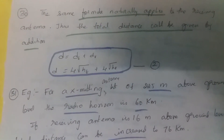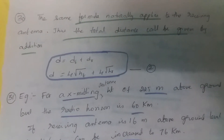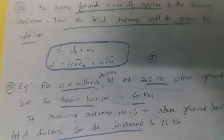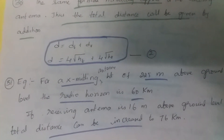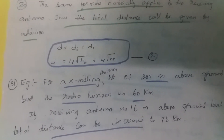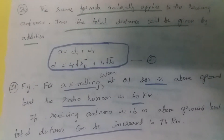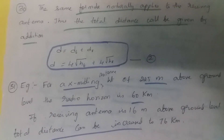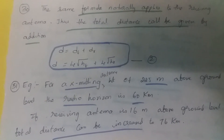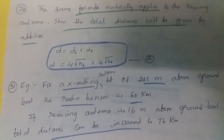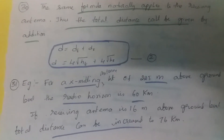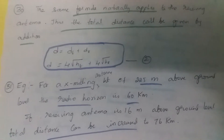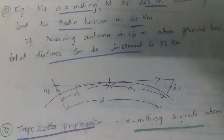For a transmitting antenna of height 225 meters above ground level, the radio horizon is 60 kilometers. If the receiving antenna is 16 meters above ground level, the total distance can be increased to 76 kilometers. Using 4√ht + 4√hr: ht is 225, so √225 = 15, giving 4 × 15 = 60 km; hr is 16, so 4√16 = 16 km. So as you increase the receiving antenna height, the total distance increases to 76 kilometers. This is how the signal gets transmitted.